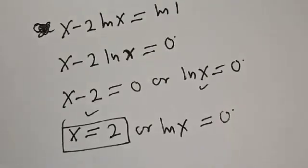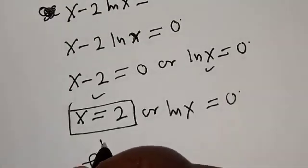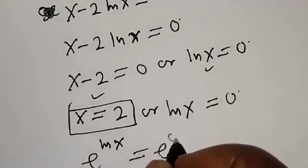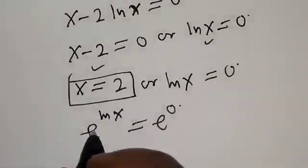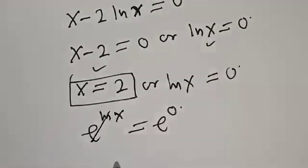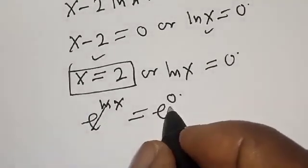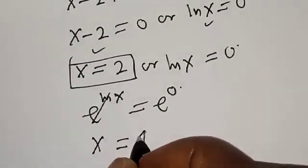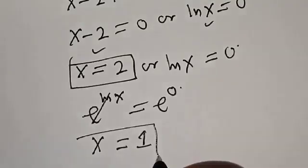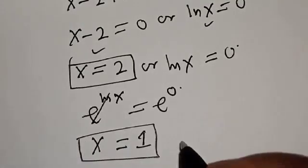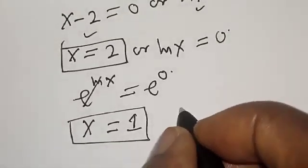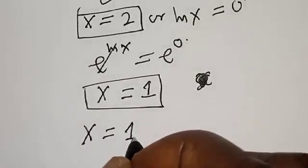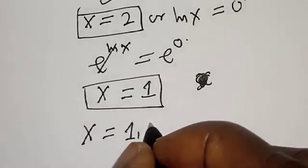Then let's introduce e. We have e raised to power natural log of s is equal to e raised to power zero, which is equal to one. Then s is equal to one — that is the second value of s. Therefore our answers are s is equal to one or two.